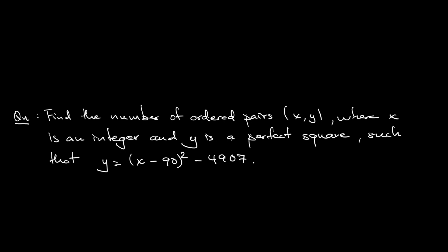So how to deal with this? x is an integer, y is a perfect square. Because y is a perfect square, let's try this together. Why not just put y as something square? Let's say m square, so m is just an integer as well.